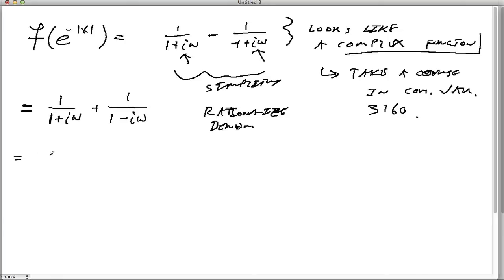And what we're going to have to do is multiply both sides by the opposites denominator. So what we're going to do is I'm going to multiply 1 minus i omega over 1 minus i omega by 1 over 1 plus i omega plus 1 plus i omega over 1 plus i omega times 1 minus i omega. All right, so I haven't changed the problem. I'm just doing the rationalization part.